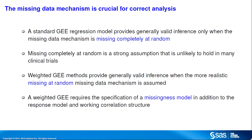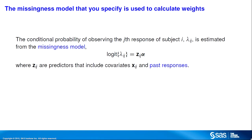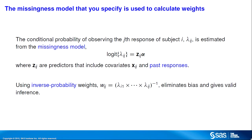Weighted GEEs provide valid inference when the more realistic missing at random mechanism is assumed. A missing at random assumption means that the missingness is independent of the current and future responses conditional on observed past responses and covariates. A weighted GEE requires that you specify a missingness model in addition to the response model and working correlation structure. A logistic model is used and, in accordance with the missing at random assumption, observed past responses should be included in the model. The conditional probabilities are incorporated into a weighted GEE through the computation of inverse probability weights, which can eliminate bias and provide valid inference even if the working correlation structure is misspecified.